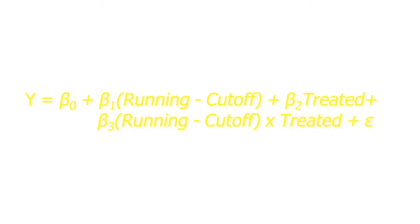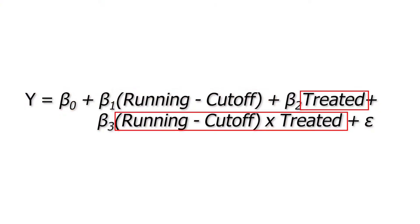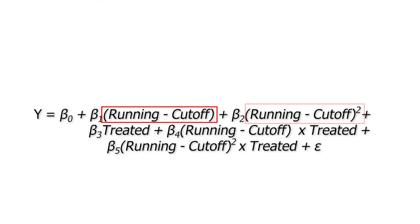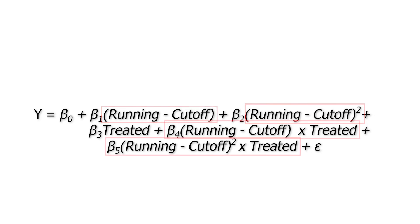Adding a polynomial term is straightforward. Previously we had the running variable minus the cutoff, interacted with whether you're on one side of the cutoff or the other. For a polynomial term, you simply add the running variable minus the cutoff squared, and interact that with whether you are above or below the cutoff. That's it.